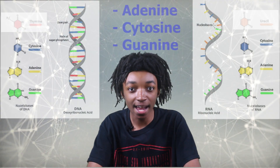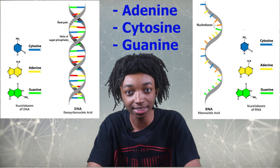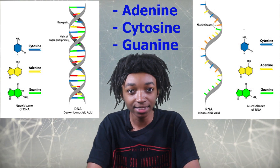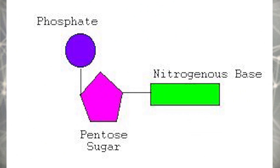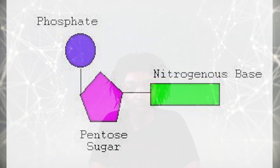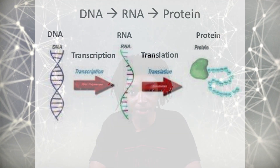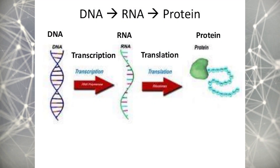Number one, both DNA and RNA contain nitrogenous bases: adenine, cytosine, and guanine. Number two, both of their nucleotide structural components are built by a sugar, base, and phosphate backbone. Number three, both are very important for the making of proteins. That wraps up the similarities.